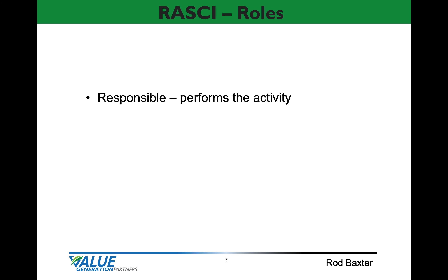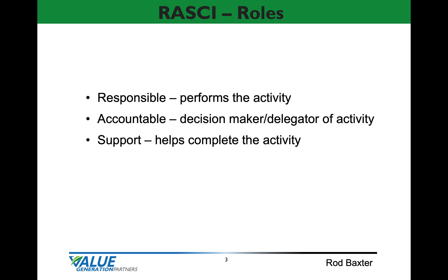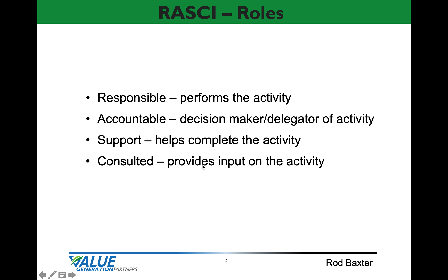Let's talk about the five roles associated with a RASCII matrix. The first role is responsible — there will only be one responsible position assigned for each activity; that's the person who performs the activity. The next role is accountable, and this role is the decision maker or the delegator of the activity to the responsible role. Occasionally you may have an activity where the accountable and responsible is the same position or person. The role of support serves to support the responsible position to complete the activity, and there may be more than one person in a support role. The next role is consulted — this position provides input on the activity to the responsible position, and this person is typically a subject matter expert.